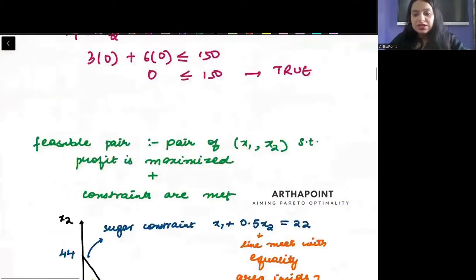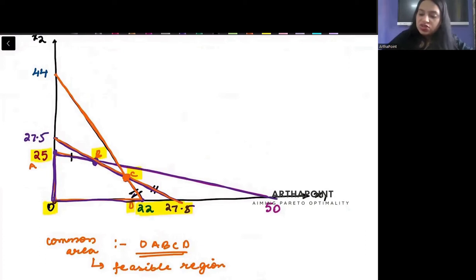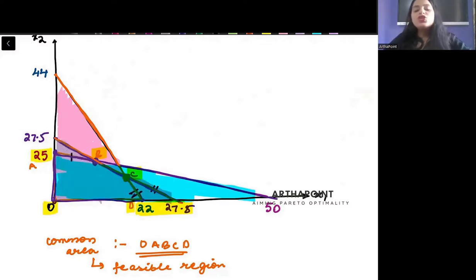When you will make these three curves, the final graph will look something like this. Each is shaded towards the origin. This one was 44, 22, shaded towards the origin. This was the first one we plotted, shaded towards the origin. And then the third one plotted will be with 27.5, 27.5, shaded towards the origin. When you will shade all three towards the origin, you will come up with a common area. And that common area is going to be this. This will be the common area that you will have.